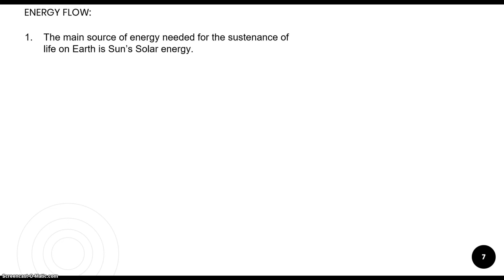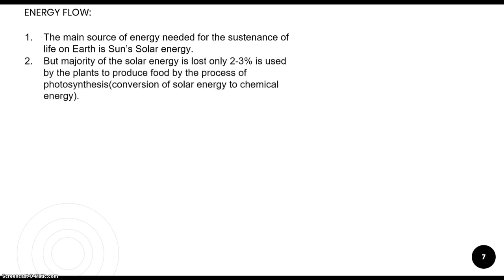The next topic is energy flow. The main source of energy for the sustenance of life on Earth is solar energy. However, only two to three percent of solar energy is actually used by organisms. The first organisms to convert solar energy into chemical energy — through the process of photosynthesis — are plants.